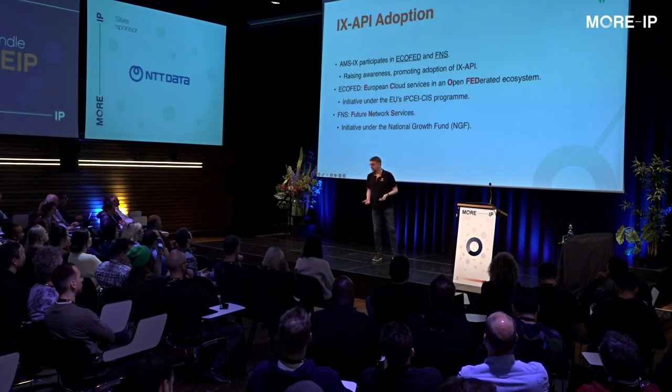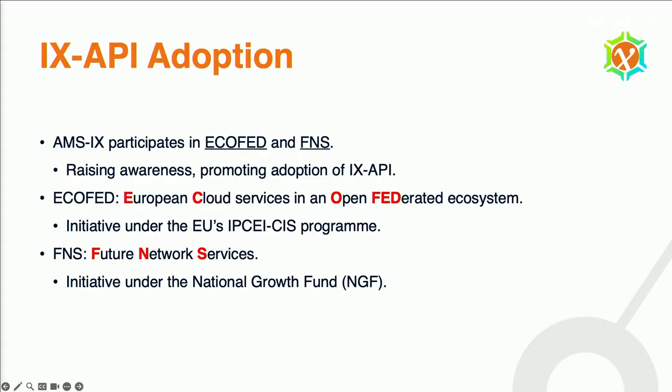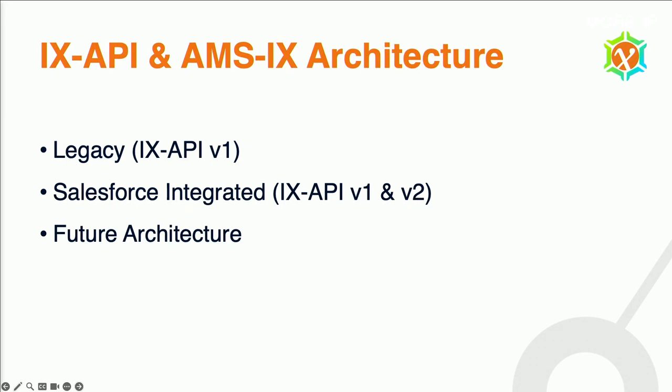So what are we doing as M6 to promote this? We're trying to see where it's applicable outside of just purely the M6 environment. We participate in EcoFed and FNS, which are EU-funded efforts geared toward future network services and federated cloud connectivity. As part of that, there is always a network automation layer that has to happen, so we're looking at whether we can use IX API for this, if it's an applicable technology. If not, that's also something we can learn from.